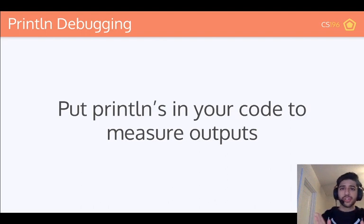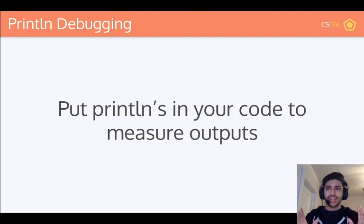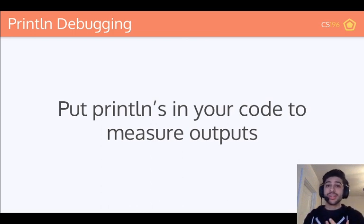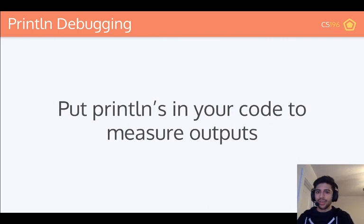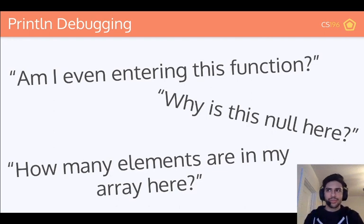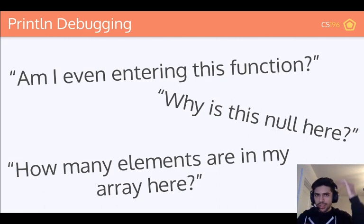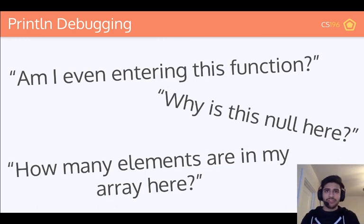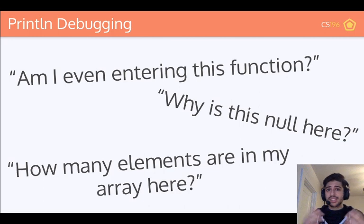First things first — the super simple version of debugging: print line debugging. You just put print lines all over your code to measure outputs. Despite being quite simple, it's actually quite powerful. I know some people that have never done anything except print line debugging and they've been coding for many years. What kind of questions can you answer with print line debugging? Well, you can use these print lines to answer questions like: am I even entering this function? Why is this value null here? How many elements are in my array at this point in time? If I put a print line inside of an if statement and it's never executed, we know we're never entering that if statement.